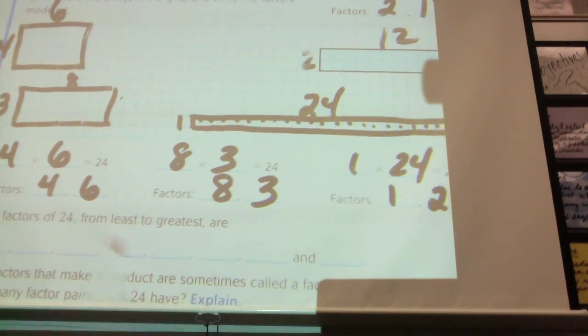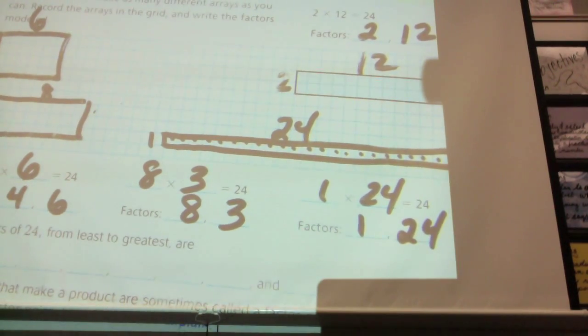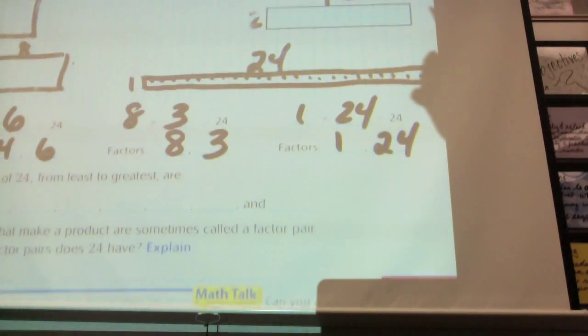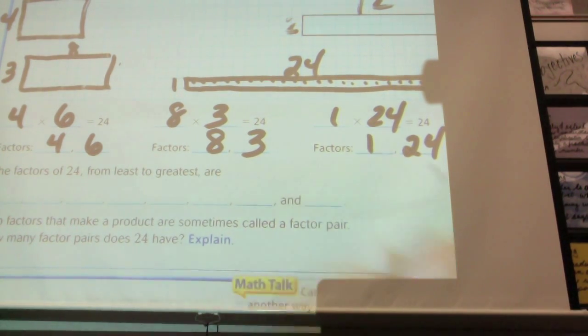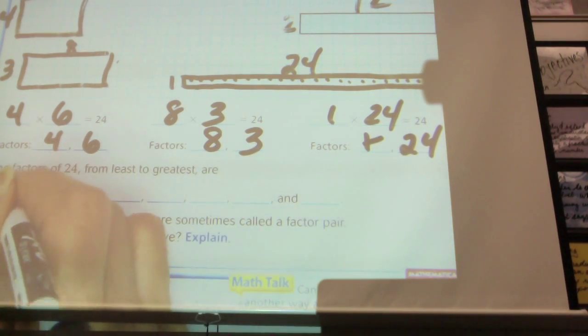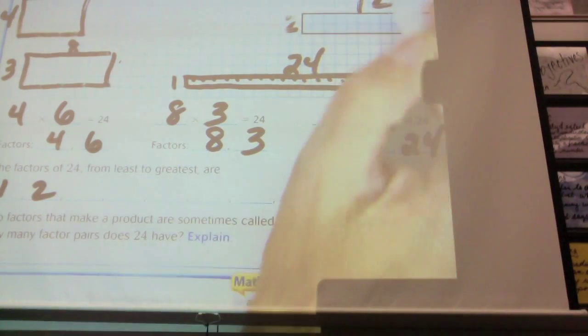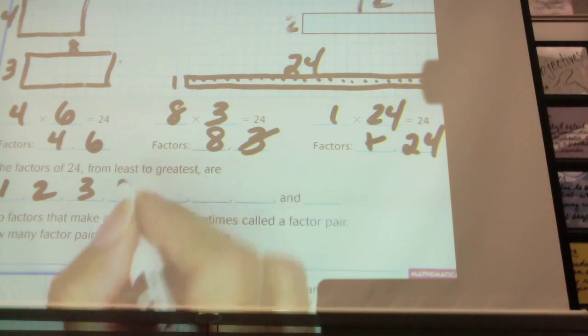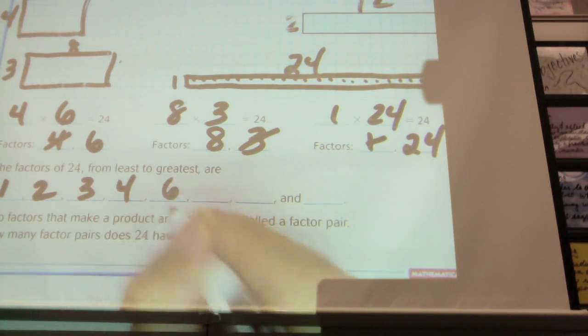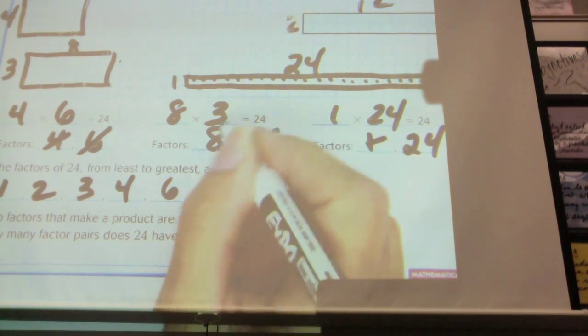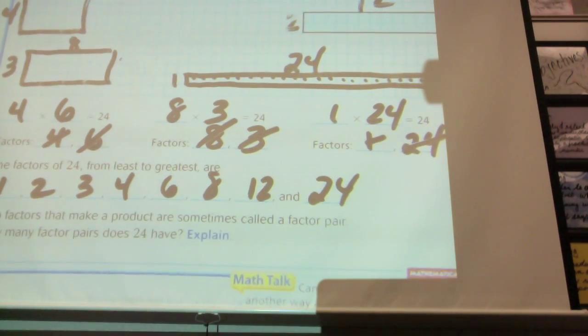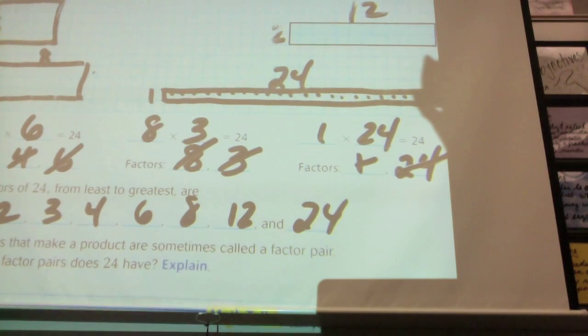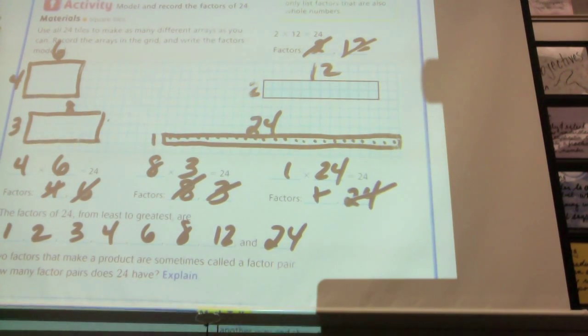So, I have 2, 12, 4, 6, 8, 3, 1, and 24. Now, it's asking me to list the factors from least to greatest. So, if I asked you, what are the factors of 24, I'm looking for an answer with the numbers in order from least to greatest. So, what is the lowest one of all those? 1. I'm going to cross it off so I remember that I did 1. What's the next least? 2. Then? 3. Then? 4. 6. Then? 8. And then? 12. And then? 24. So, now we've just come up with all the factors that make up 24.